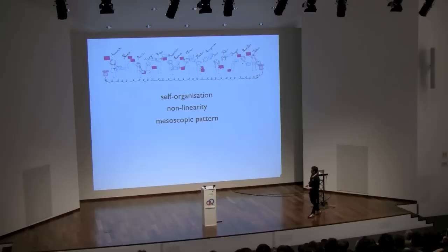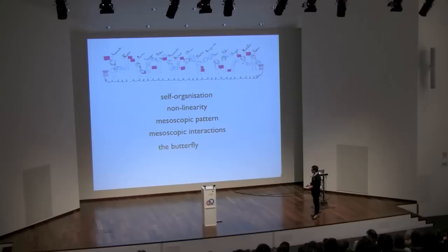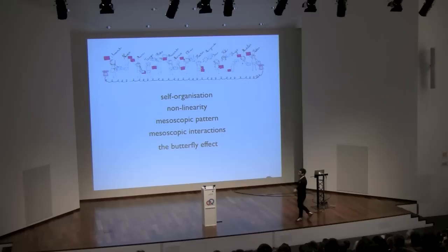Then we have the notion of the mesoscopic pattern — we saw three: all pinks, all blues, and a checkerboard. We also saw how these patterns actually interact to solve a task for a network. And finally, we saw the issue of what some people call the butterfly effect — the tantrum or the chocolate situation — where sometimes the flapping of a butterfly's wing very far away can supposedly cause a hurricane somewhere very distant.